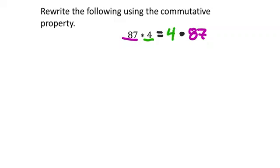So this is showing the commutative property right here. 4 times 87 would be 87 times 4 after using the commutative property of multiplication. Remember, you don't actually have to multiply this problem, you just need to show the commutative property.